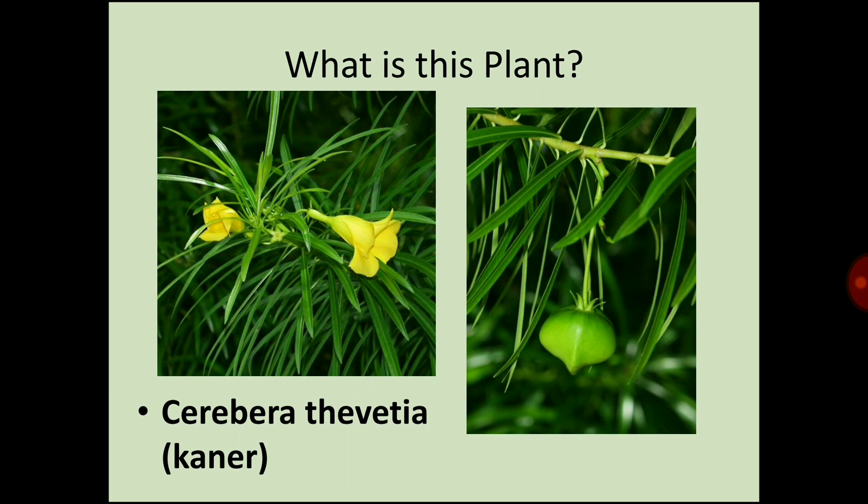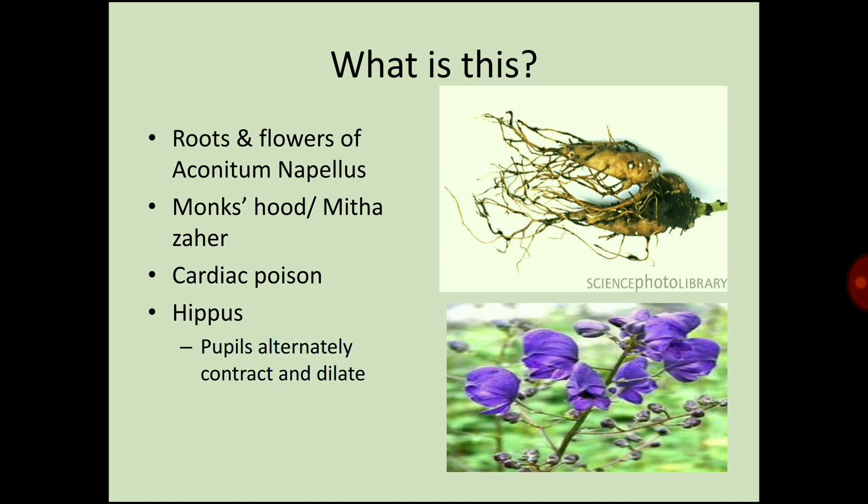The next plant shown is Cerbera thevetia (canna). Next are the flowers, roots, and flowers of Aconitum napellus, also known as monk's hood or meetha zahar. It causes cardiac poisoning. The pupils alternately contract and dilate in the case of Aconitum napellus poisoning.